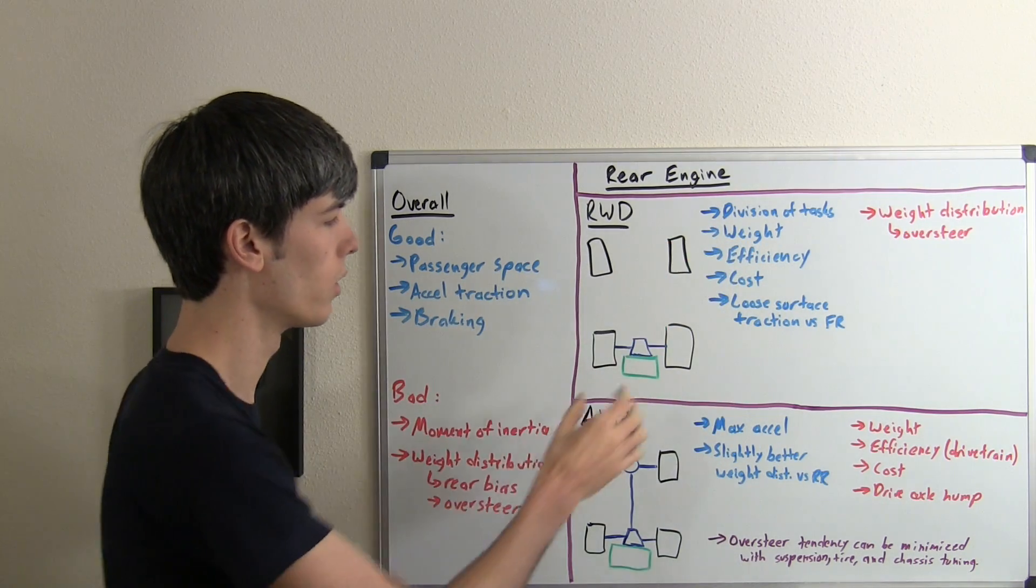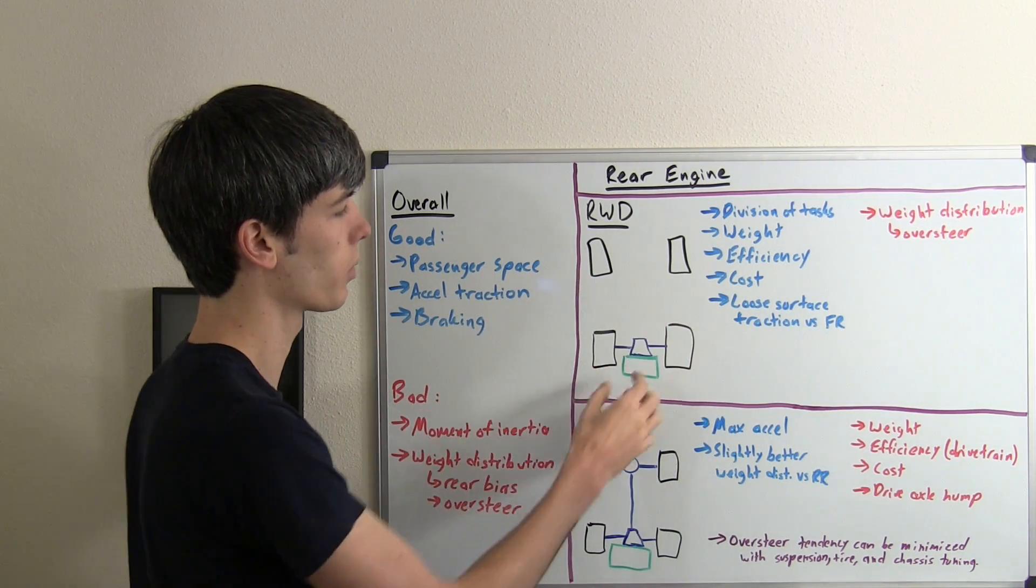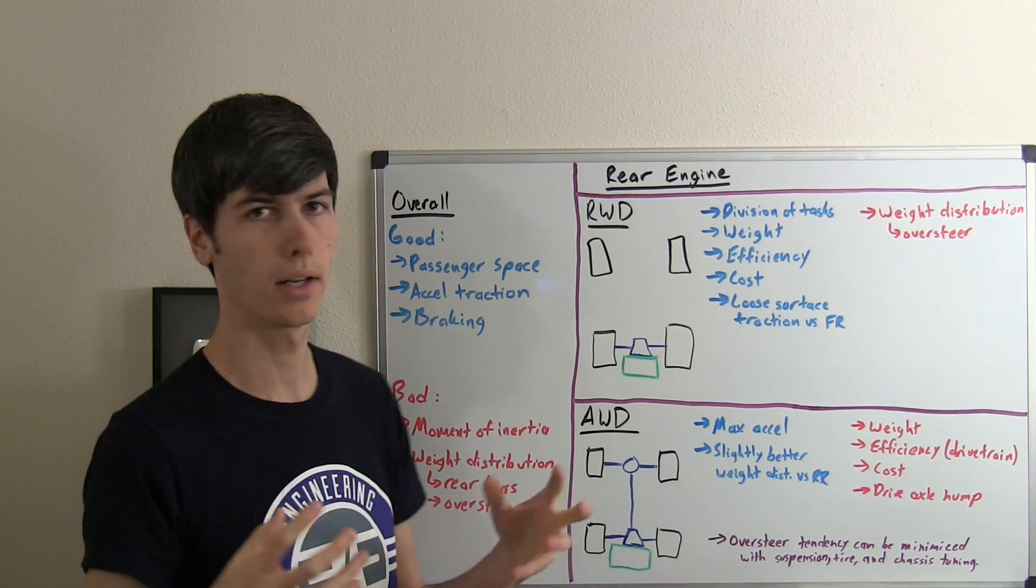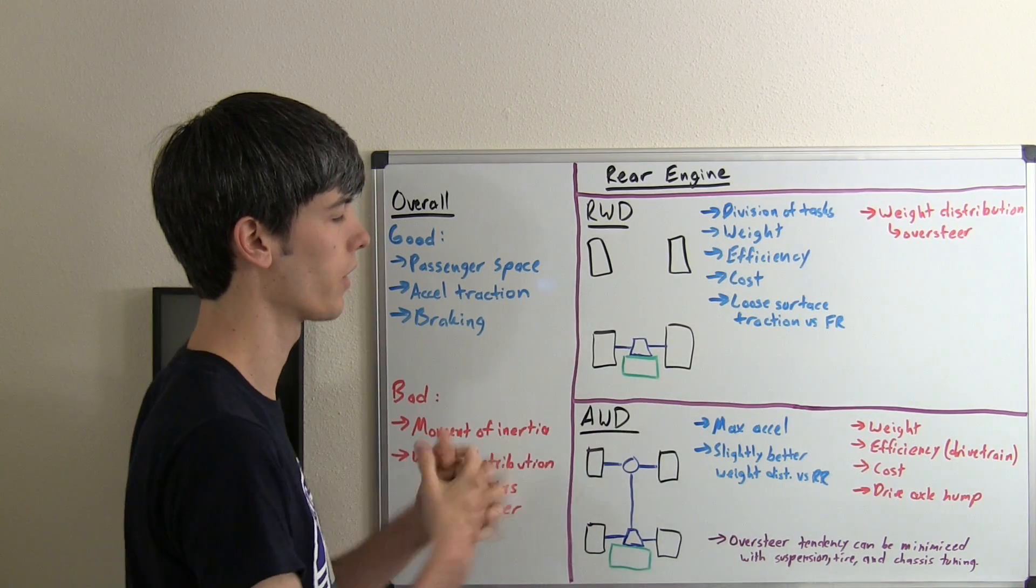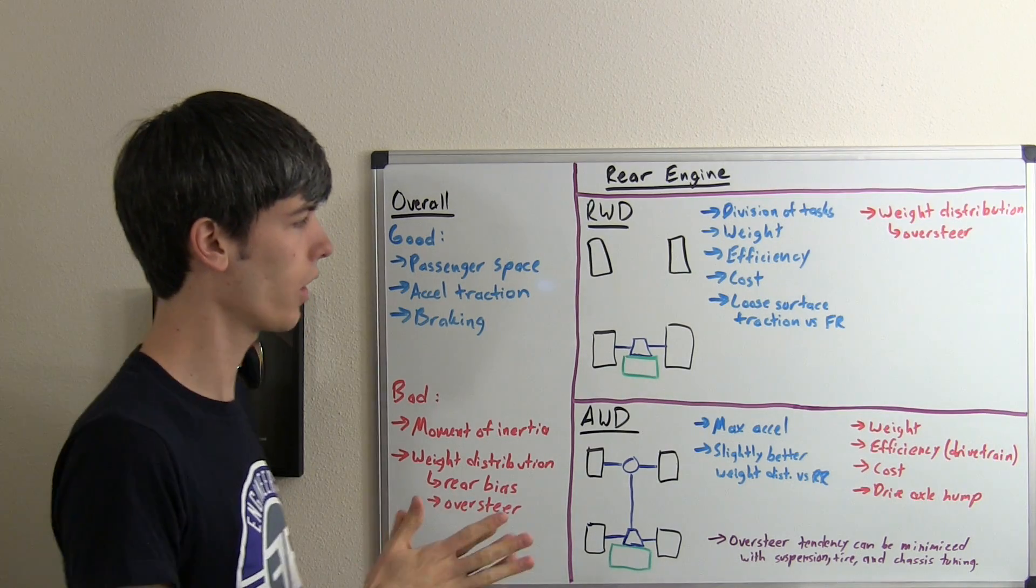Also, the weight is going to be fairly low. Look at this versus something like a front-mounted engine with rear-wheel drive. You've got less components—it's all compact, much like a front-mounted engine with front-wheel drive. All of your items are in one spot. There's not that many of them. This leads to more efficiency, less drivetrain losses, and reduced cost.